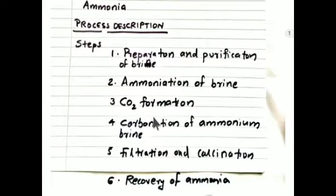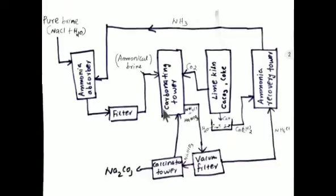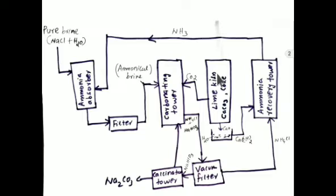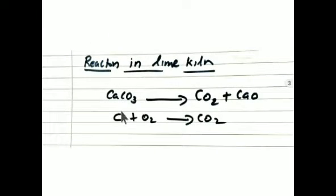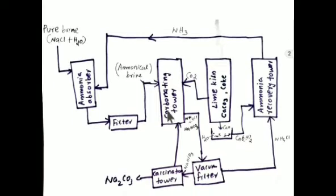The third step is carbon dioxide formation, which takes place in the lime kiln. The lime kiln contains calcium carbonate and coke. The reaction is: coke plus oxygen produces carbon dioxide in an exothermic process. The heat released decomposes calcium carbonate to form carbon dioxide and calcium oxide (quick lime). This carbon dioxide is then sent to the carbonating tower.